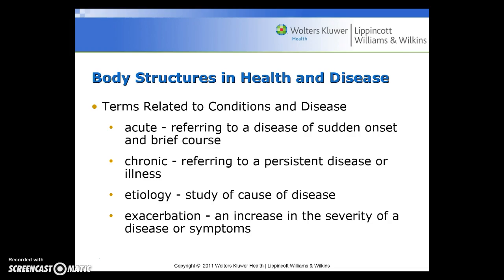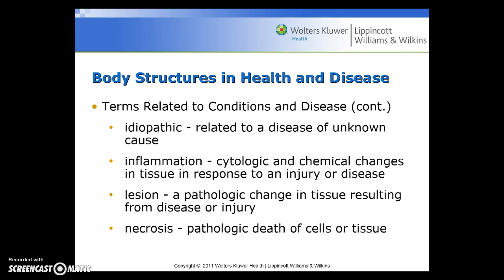Terms related to conditions and disease include: acute — a disease of sudden onset and brief course; chronic — a persistent disease or illness; etiology — the study of the cause of disease; exacerbation — an increase in the severity of a disease or symptom; idiopathic — a disease of unknown cause; inflammation — cytologic and chemical changes in tissue in response to injury or disease; lesion — a pathologic change in tissue resulting from disease or injury; and necrosis — pathologic death of cells or tissue.